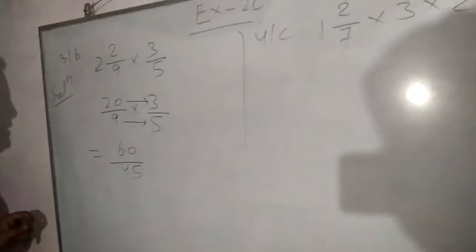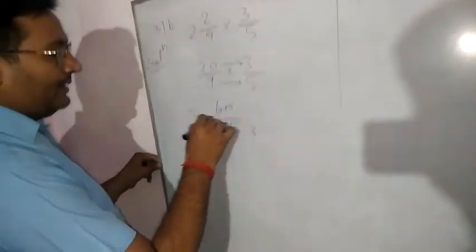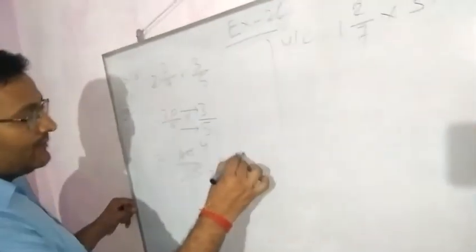So now you can simplify it: 15, 3 here, 45, 15, 4 here. What is 4/3? It is the improper fraction.